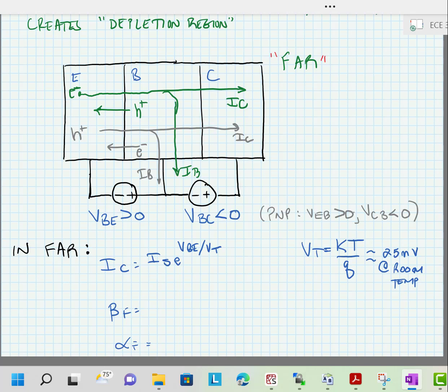We also have beta forward, which is the current gain factor for the device. This tells us what the relative current is of the collector current relative to the base current. Typically, this is a pretty big value, greater than 100, if we're using it in the forward active region. And we also have alpha, which is equal to beta forward divided by one plus beta forward. And again, if beta is large, this is typically approximately equal to one.